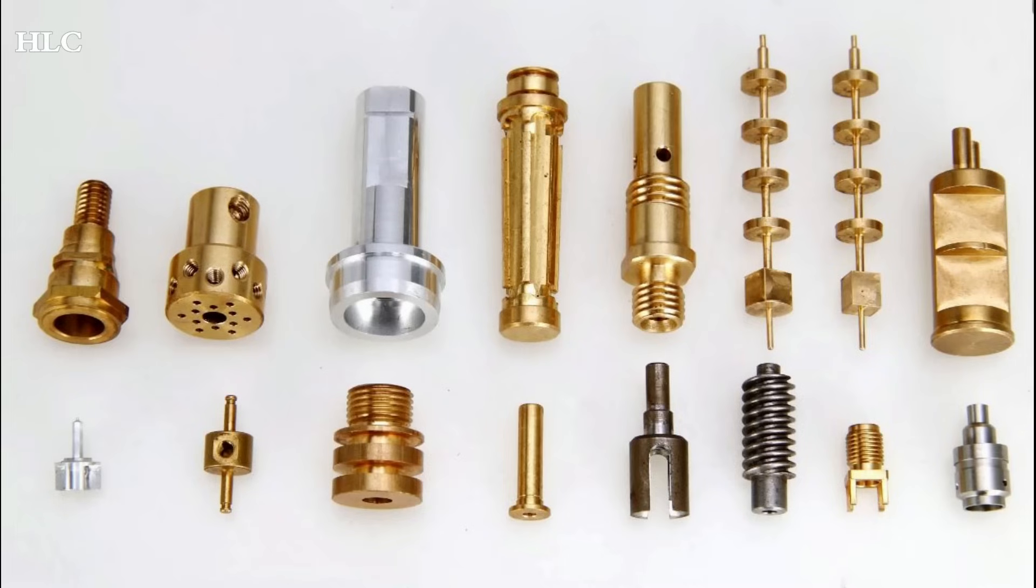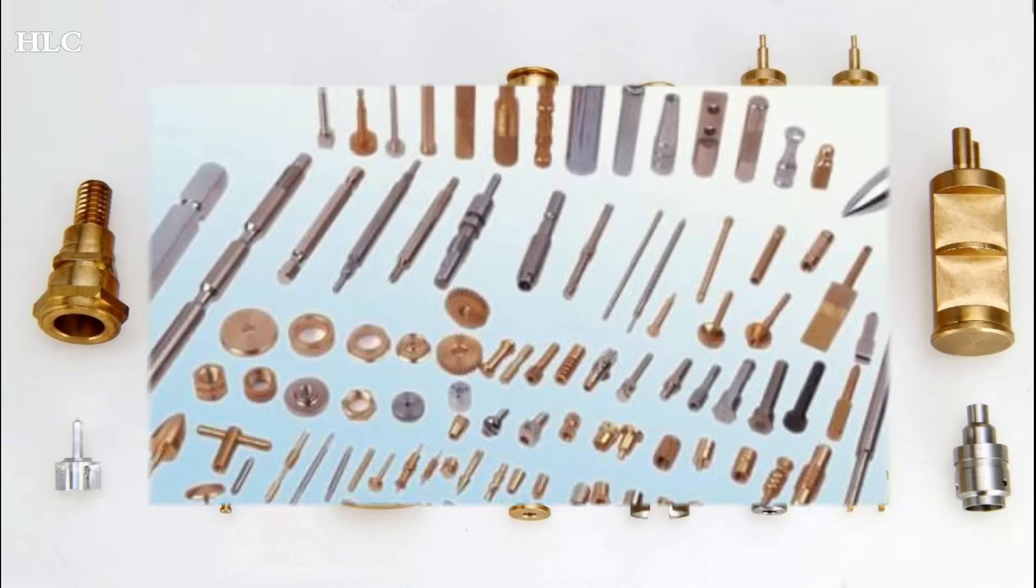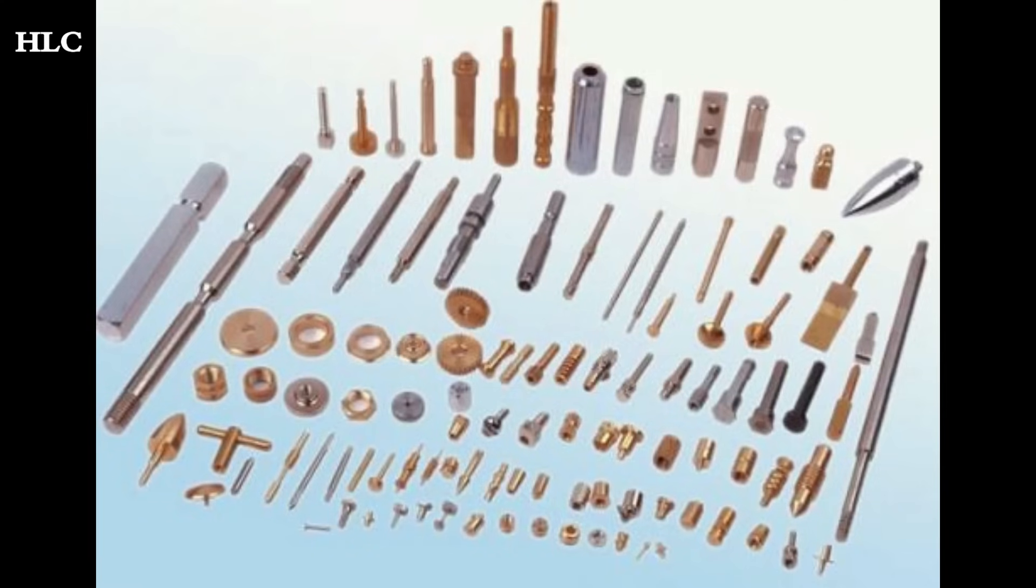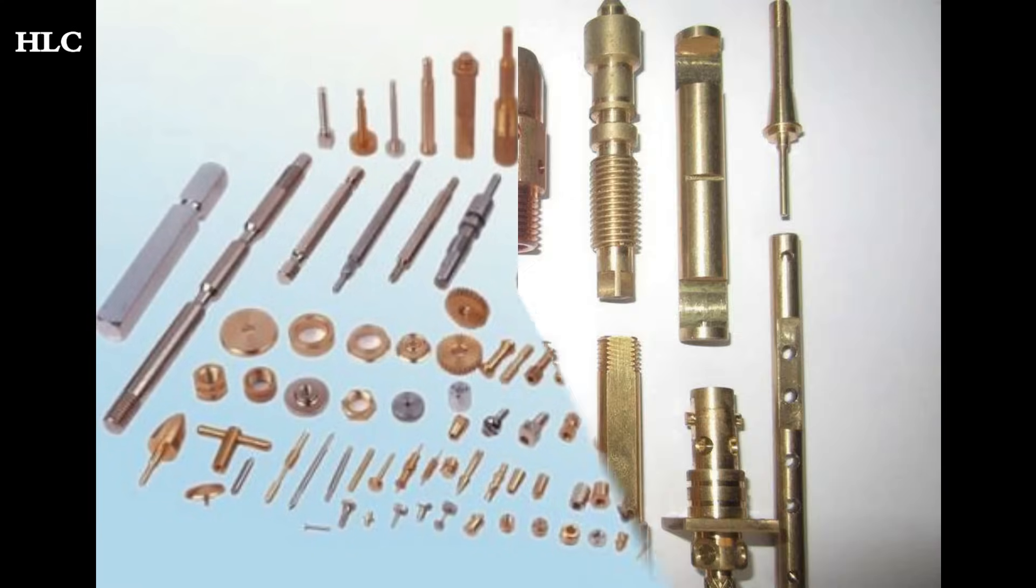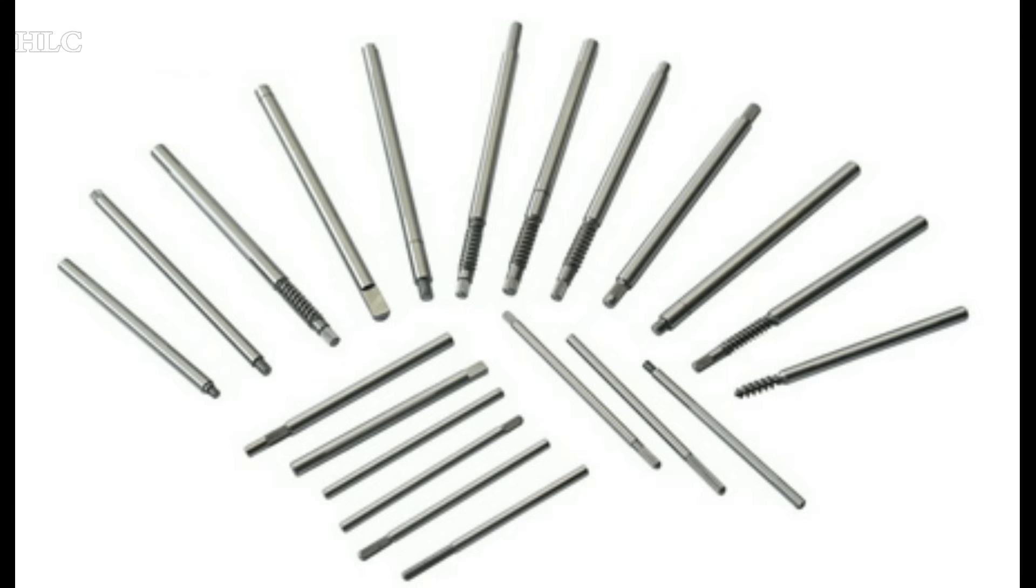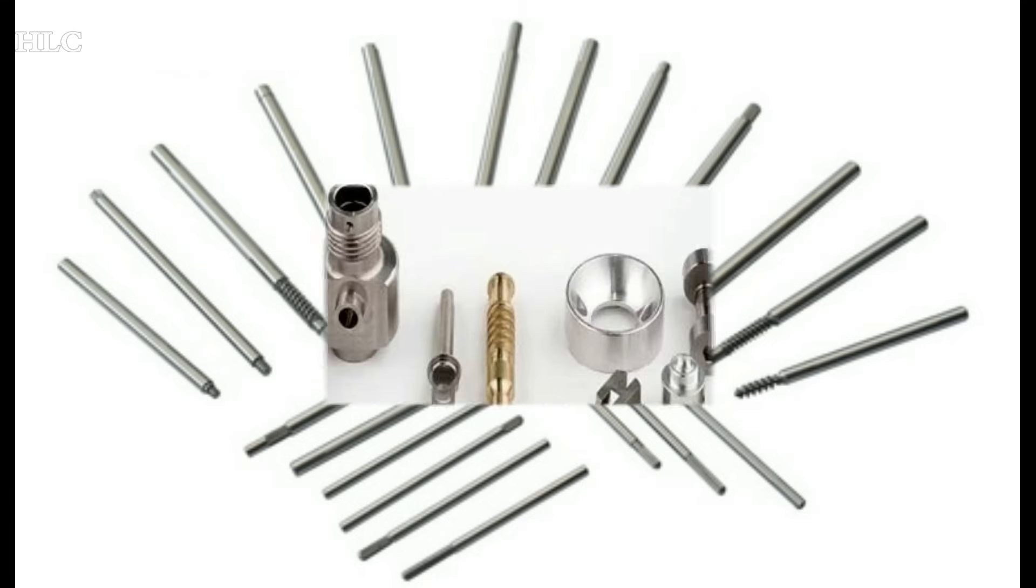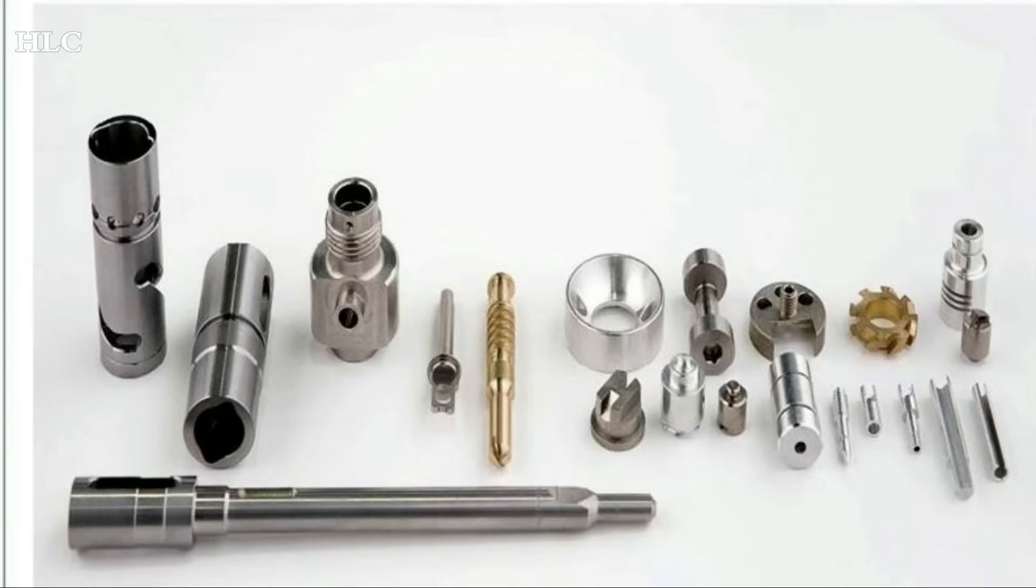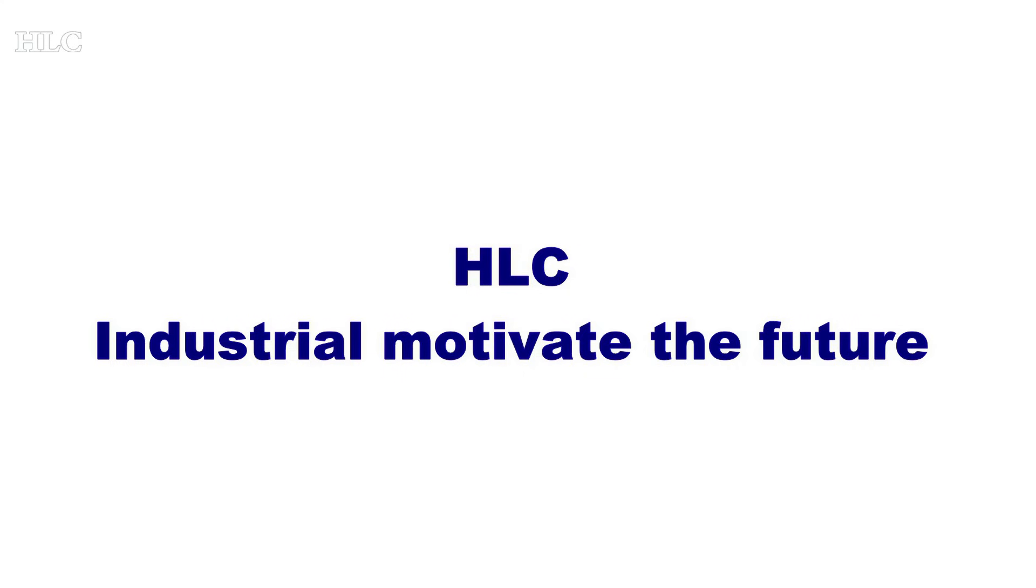Commonly used processing materials include aluminum, copper, iron, stainless steel, and other materials. These parts can be widely used in electronics, electrical appliances, communications industry, and industrial applications to motivate the future.